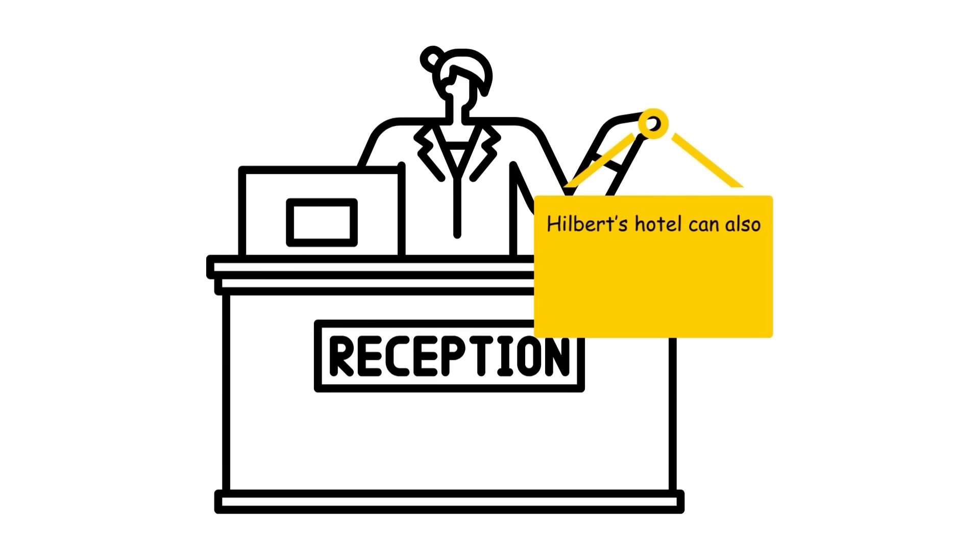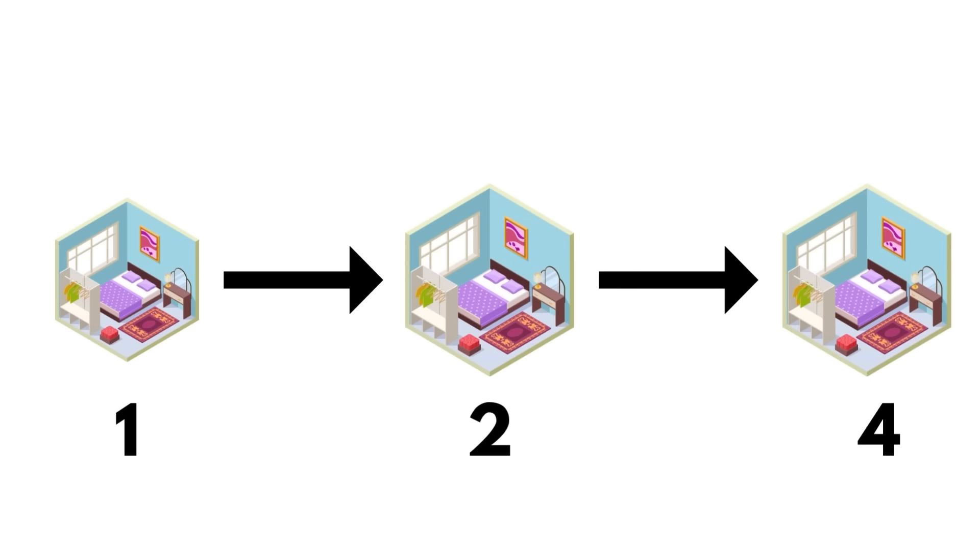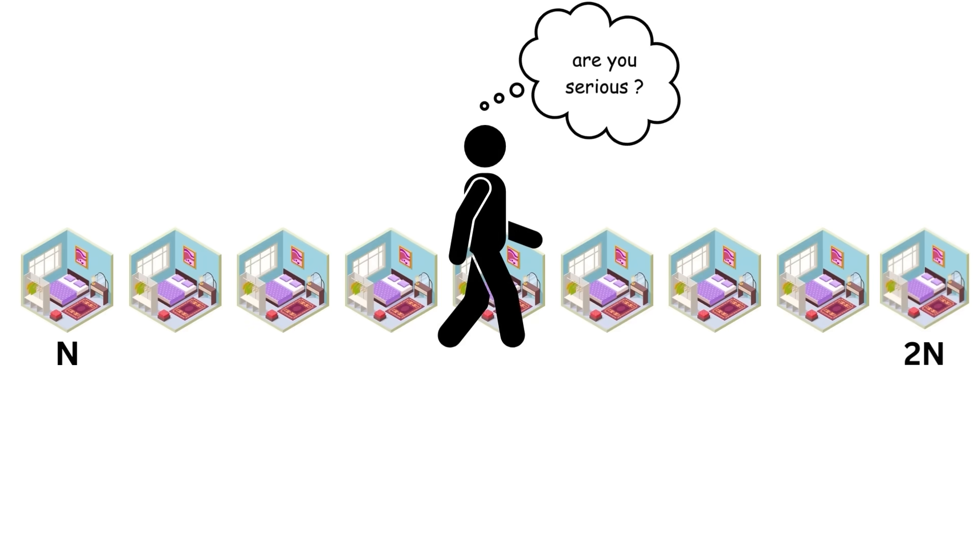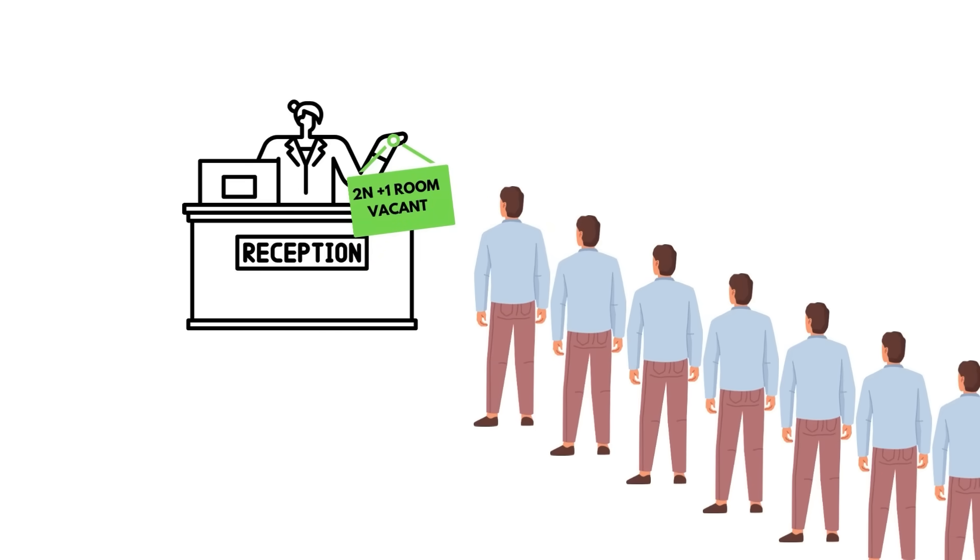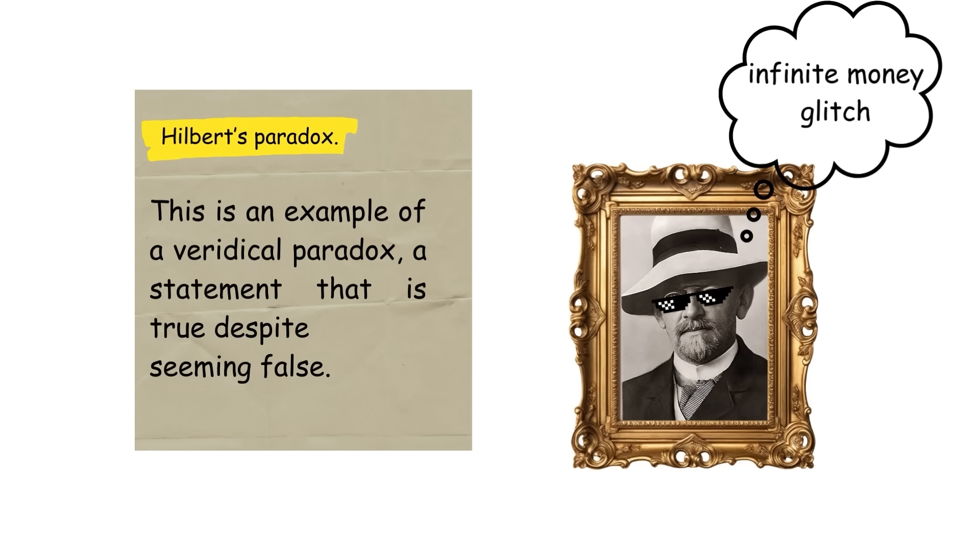Hilbert's Hotel can also accept a countably infinite number of new guests. The guest in room 1 moves to room 2, the one in room 2 to room 4, and in general, the guest in room N to room 2 times N. This leaves the odd numbered rooms free for the new guests. The fact that Hilbert's Hotel can accommodate new guests despite being full is known as Hilbert's Paradox. This is an example of a veridical paradox, a statement that is true despite seeming false.